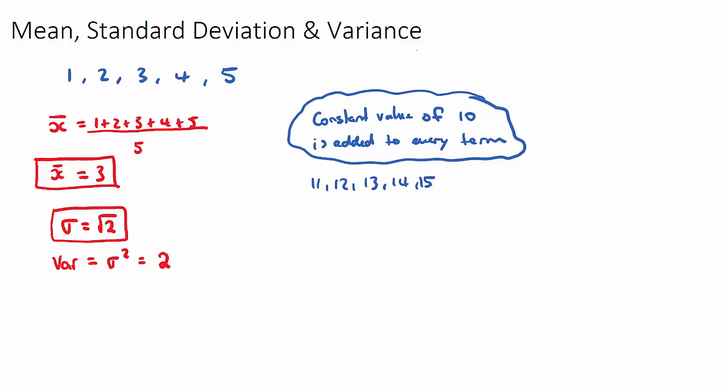And then the follow-on questions say, well, now with our new data set, what is the new mean? And the new mean, if we just add a constant to every term, will be the old mean plus that constant. And that's pretty clear here with this example. It'll just be 13. So the new mean will just be the old mean of 3 plus the constant term of 10.